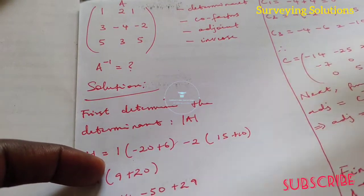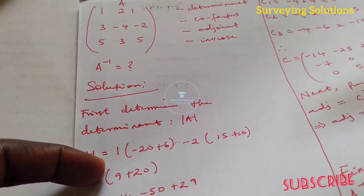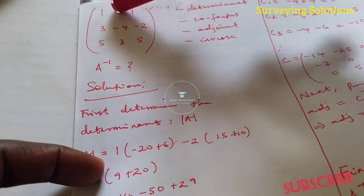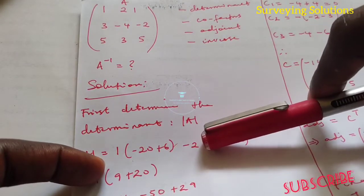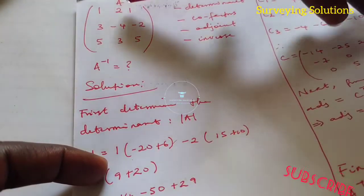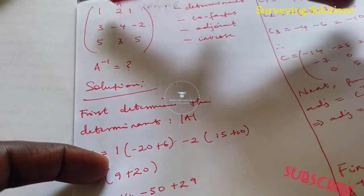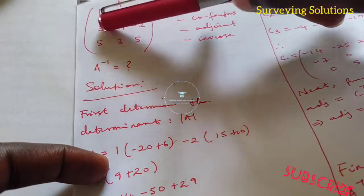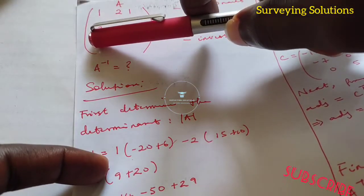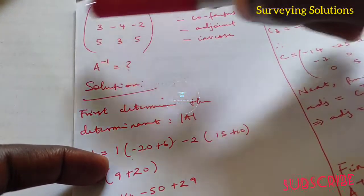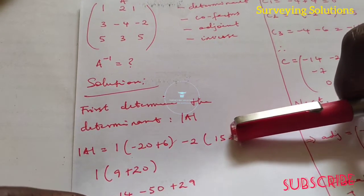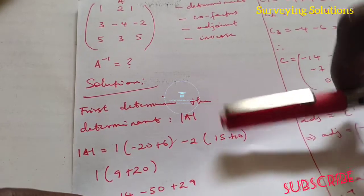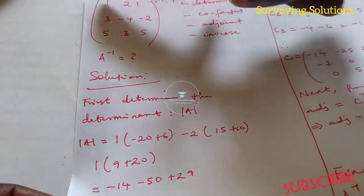Now the next thing — we come to this second element which has a minus sign, that's why you're seeing this minus in front of the 2. Since we are now considering this element, the whole of this column and row has been eliminated. We have 3 times 5 which is 15, then minus 2 times 5 which is minus 10. Since there is a minus there, minus times minus gives you plus — that's why it's changing to plus here.